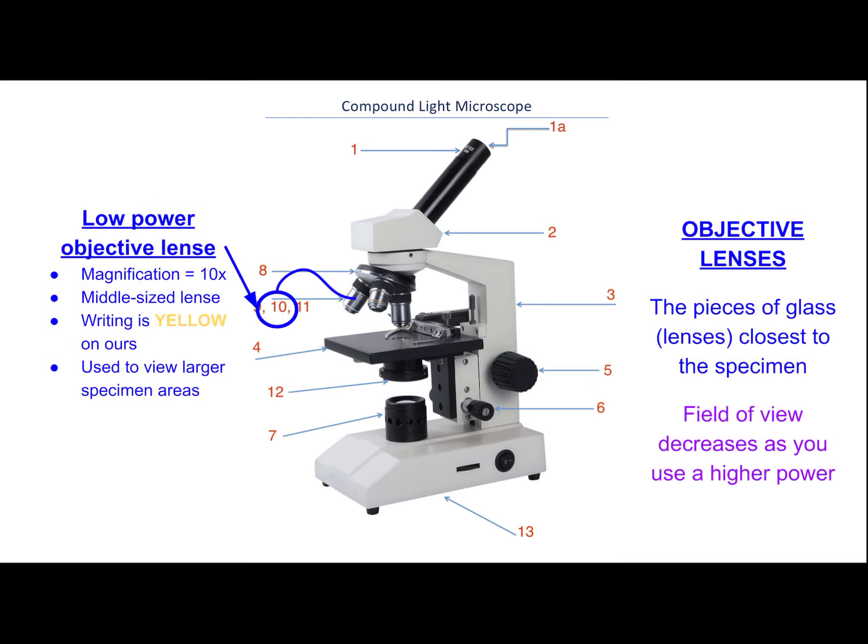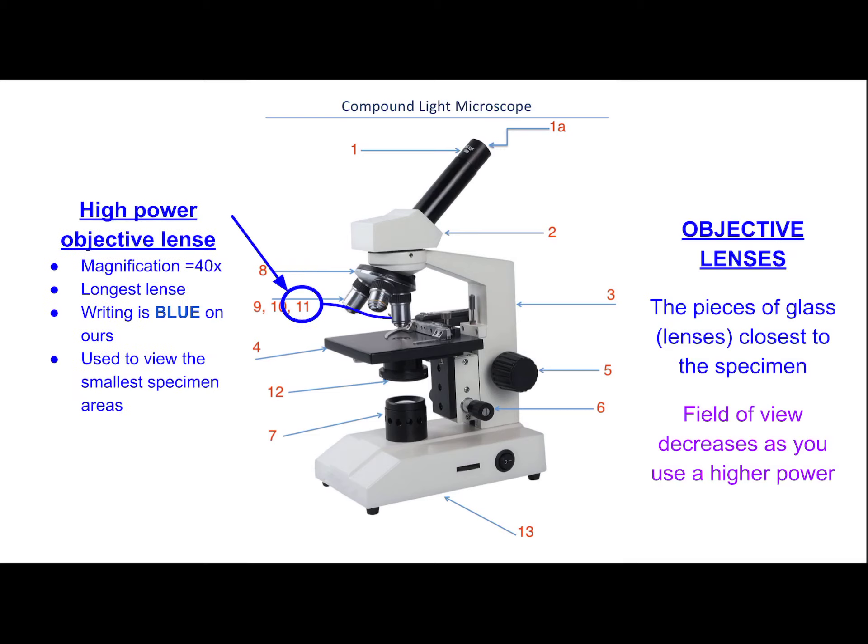The next, middle-sized lens is the low power objective lens. This has a magnification of 10 times. On our classroom microscopes it has yellow writing. This is used to view a larger area of the specimen — it provides more detail than scanning power, but the field of view isn't as small as the next one.